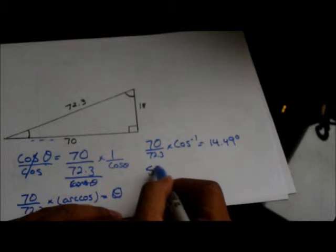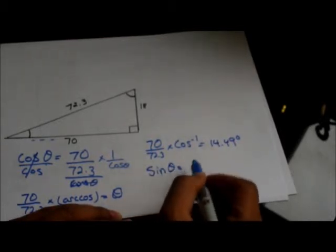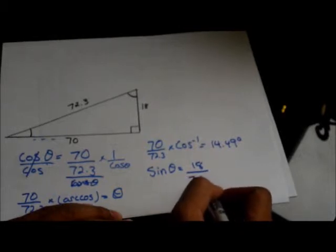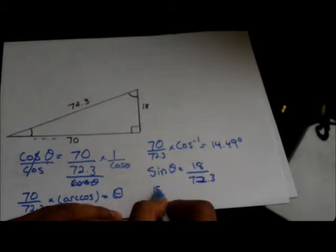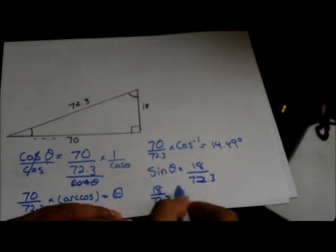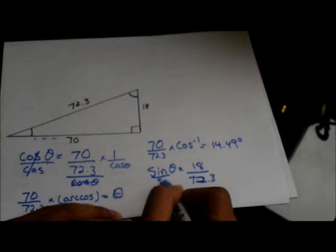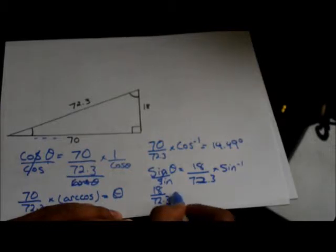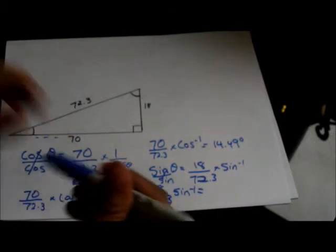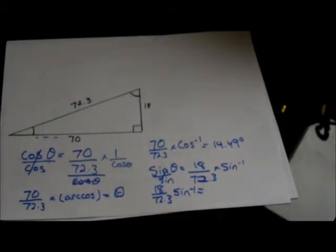So, sine theta is equal to 18 over 72.3. It's the same thing. We're defining it by sine. So, multiplying it by sine negative 1 is equal to, and it will work out to 14.49. Or, something really close to it.